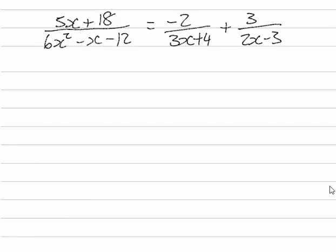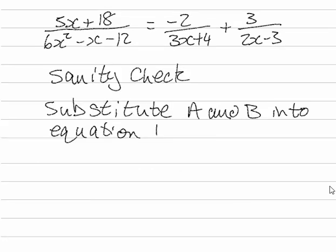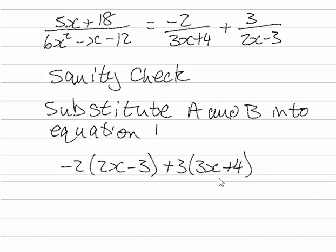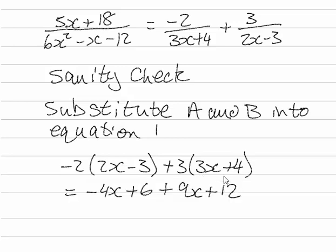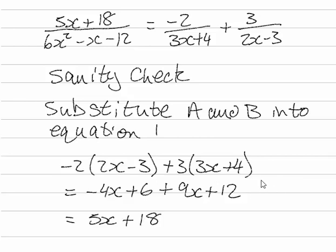So now we need to do a sanity check. We're going to substitute our values for A and B into equation 1. So we have minus 2 times 2x minus 3 plus 3 times 3x plus 4. If we expand that we're going to get minus 4x plus 6 plus 9x plus 12 and that's going to give us 5x plus 18 which means that our partial fractions are correct.